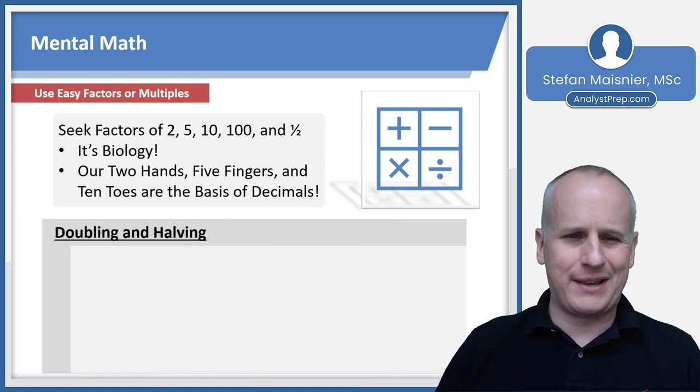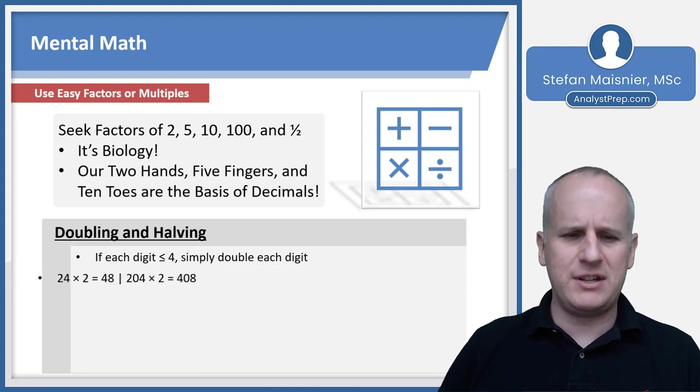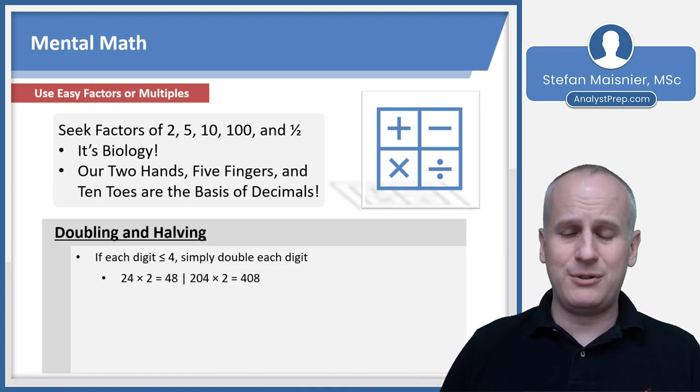So let's talk about doubling and halving first. If each digit in a number is less than or equal to four, you can simply double each digit. So for instance, 24 times two is 48. Two times two is four. Four times two is eight. Easy enough. Even something like 204 times two, that's going to be 408 because two times two is four, zero times zero remains zero, and four times two is eight.